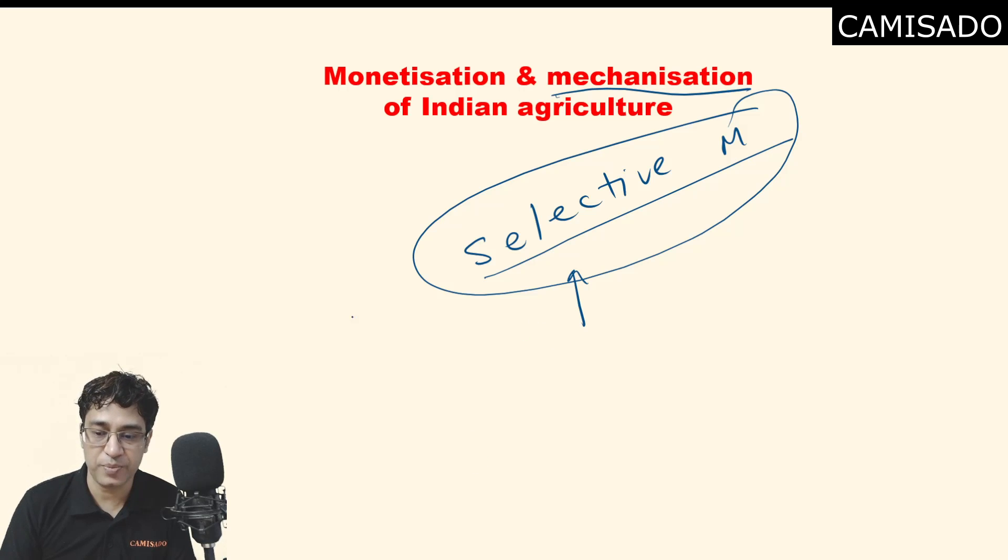Moreover, when monetization and commercialization of the Indian agriculture occurred, this also led to the land reforms getting sidelined. The government also became a little lenient on the land reforms. These also got a little sidelined.